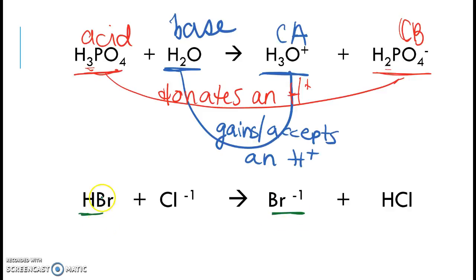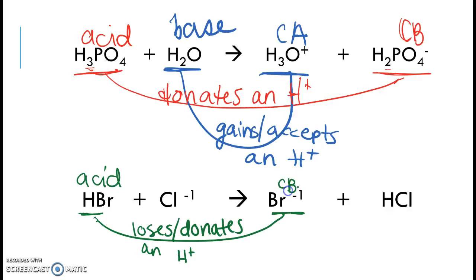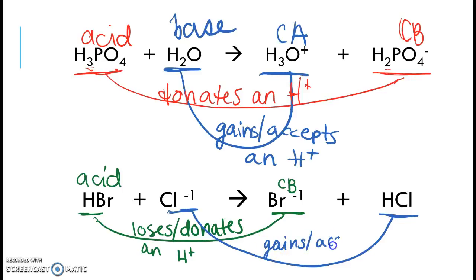In this example, H2O donates an H+, so the substance that loses or donates the H+ is our acid, and the product that lost the H is our conjugate base — that's Br-. We also have Cl- going to HCl. Cl- gains or accepts an H+, so by definition the reactant that gains or accepts the H+ is the base. Bases are always paired with conjugate acids, because the conjugate acid is the product that receives or gains the H+.